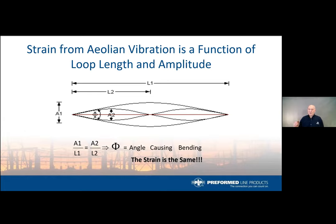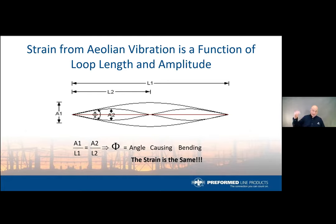If this bending strain is above the permanent deformation threshold of the conductor, you will see damage at every oscillation. Distribution conductors are typically small, meaning they have much higher vibration frequencies. Distribution systems are therefore ripe for damage at support locations when these high-frequency vibrations occur.